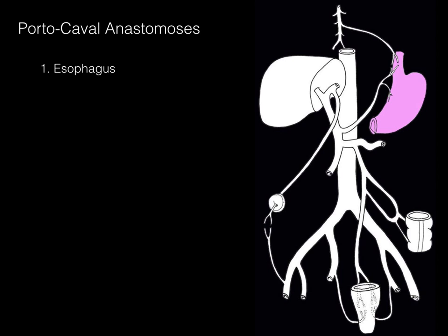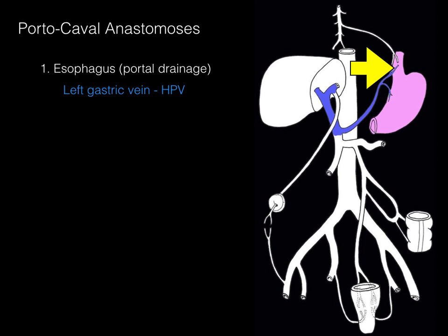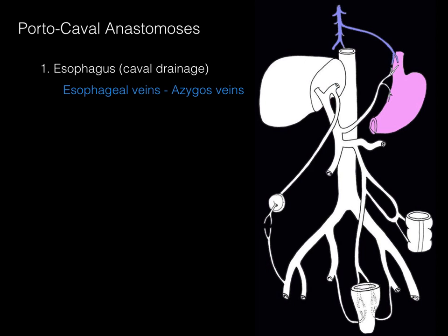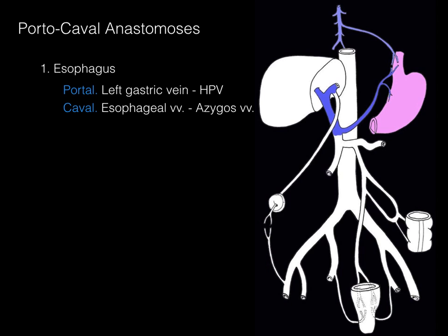First, the esophagus. The distal esophagus drains both portally and cavally. For portal drainage: the left gastric vein drains blood from the distal esophagus to the hepatic portal vein, which drains into the liver, through the sinusoids, hepatic veins, inferior vena cava, and back to the heart. For caval drainage: blood from the distal esophagus also drains through esophageal veins directly to the azygous veins, which go into the superior vena cava. So the distal esophagus has both portal and caval drainage at that junction.